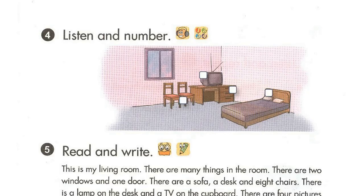Page 27, Lesson 2, Activity 4. Listen and number. This is my bedroom. There's a bed in the room. There's a desk. There are 2 chairs. There's also a TV on the desk. But there aren't any wardrobes in my bedroom.